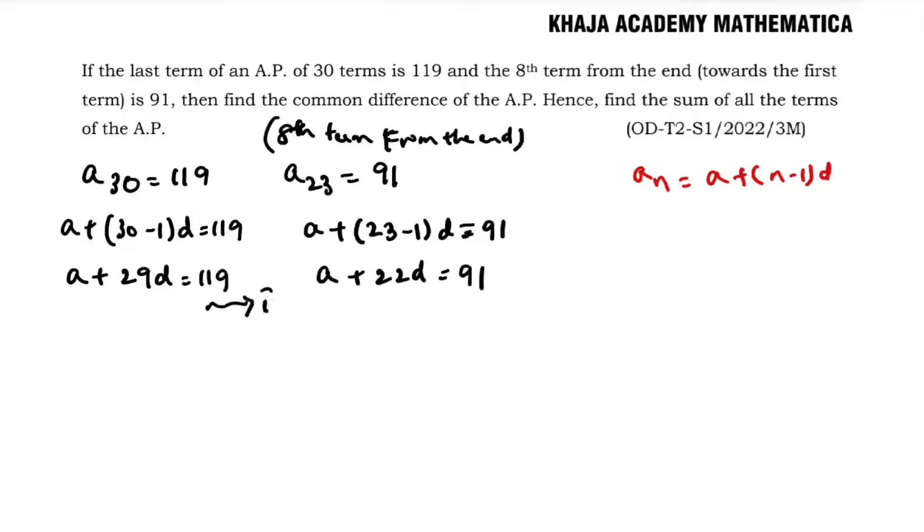Now if I simplify these two equations, equation 1 and equation 2, solving equation 1 and equation 2: a + 29d = 119, and a + 22d = 91.